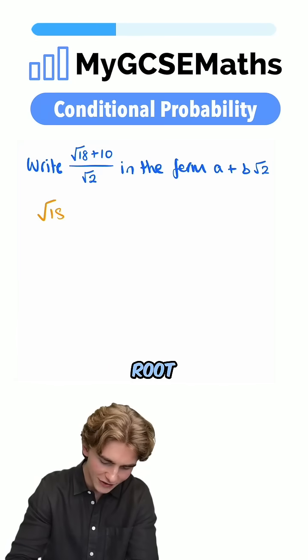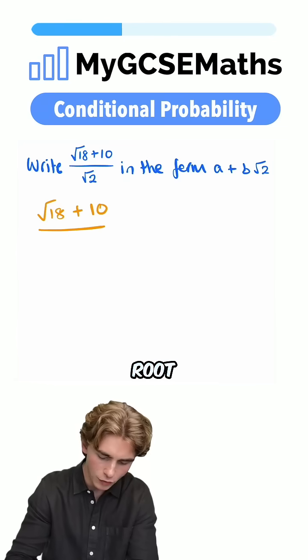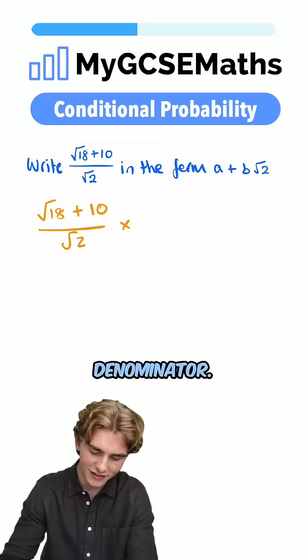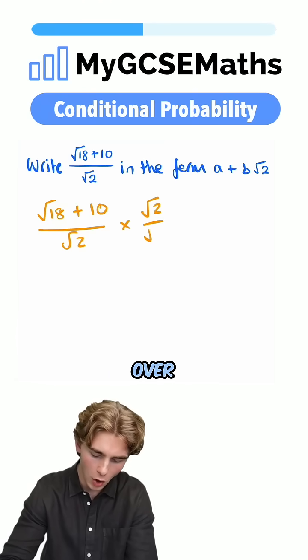So, we're going to write out our fraction root 18 plus 10 over root 2, and we're going to multiply the top and the bottom of this fraction by the denominator, so we're going to multiply by root 2 over root 2.